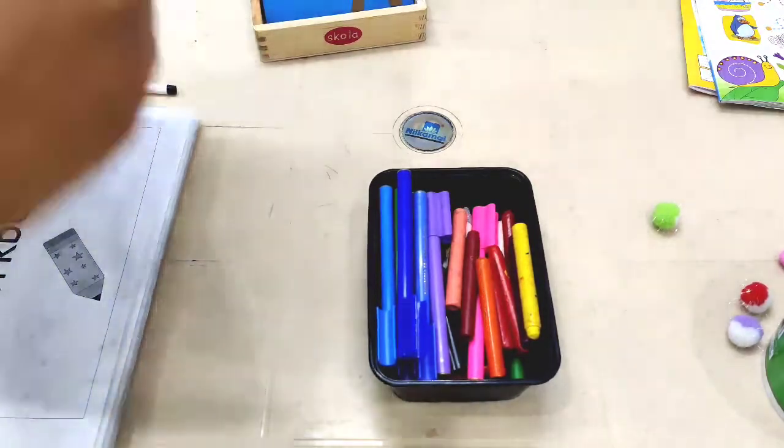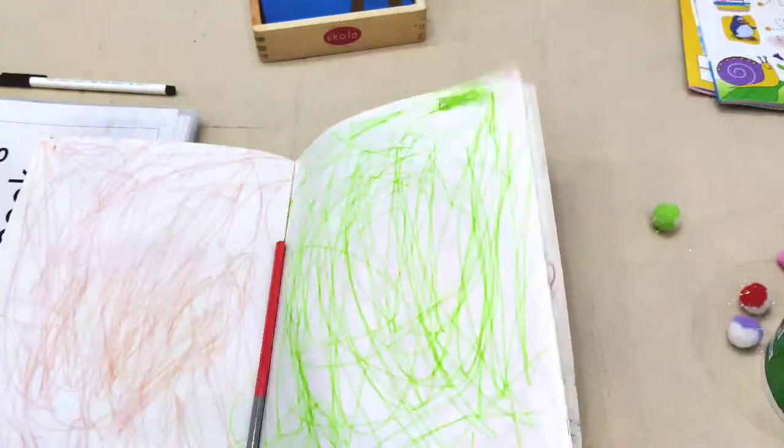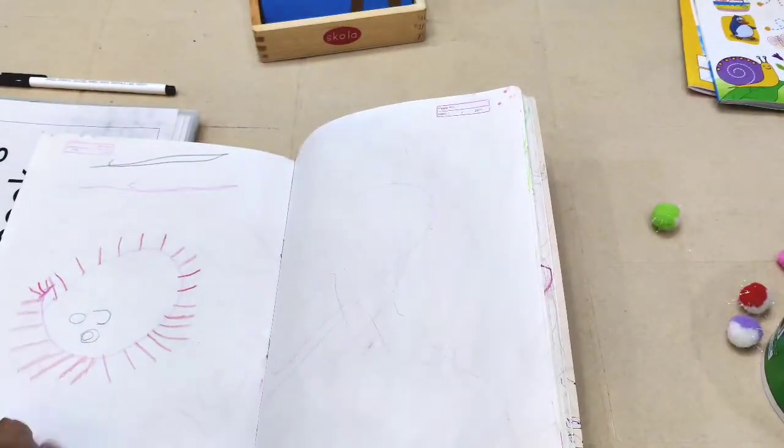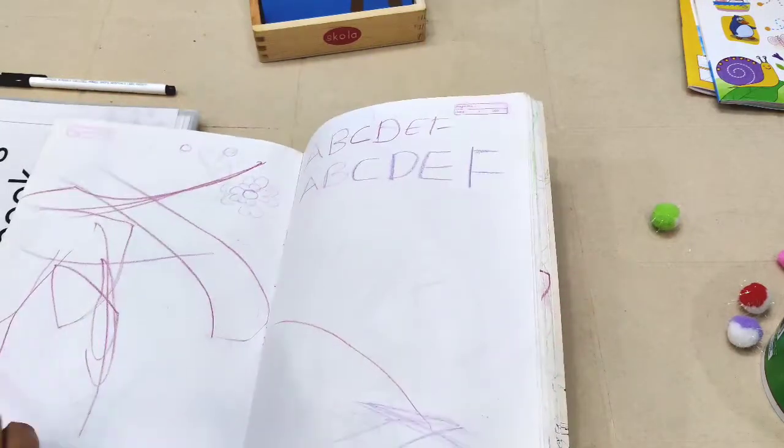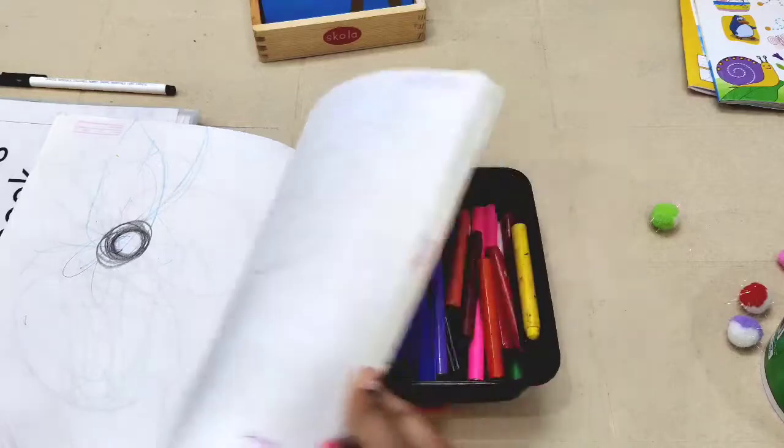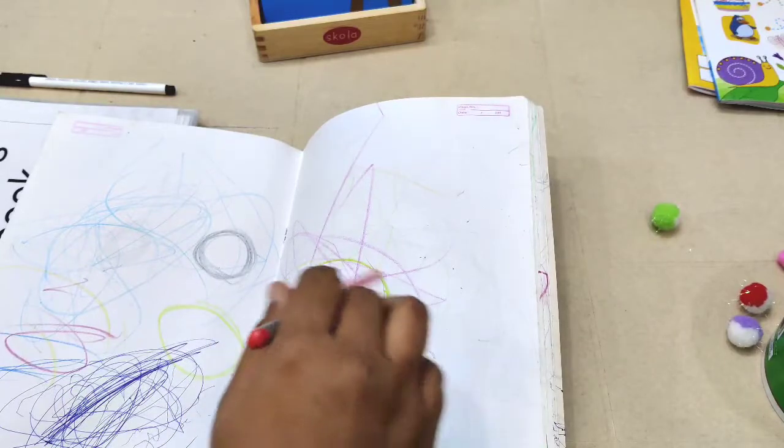Just give them a paper or a book. They will enjoy scribbling. Ask them to do circles because it is really important for writing. This will help strengthen the hands up to write later on.